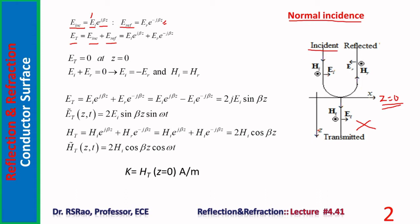For plane waves, the electric and magnetic fields must be normal to the direction of propagation, and hence parallel to the reflecting surface — both E and H are tangential to the reflecting surface. The total electric field E_t is zero at z equals zero, because the boundary condition requires the tangential component of electric field to be continuous across the interface. Since the interface has perfect conductor on one side (where E is zero), E_t must also be zero at z equals zero.